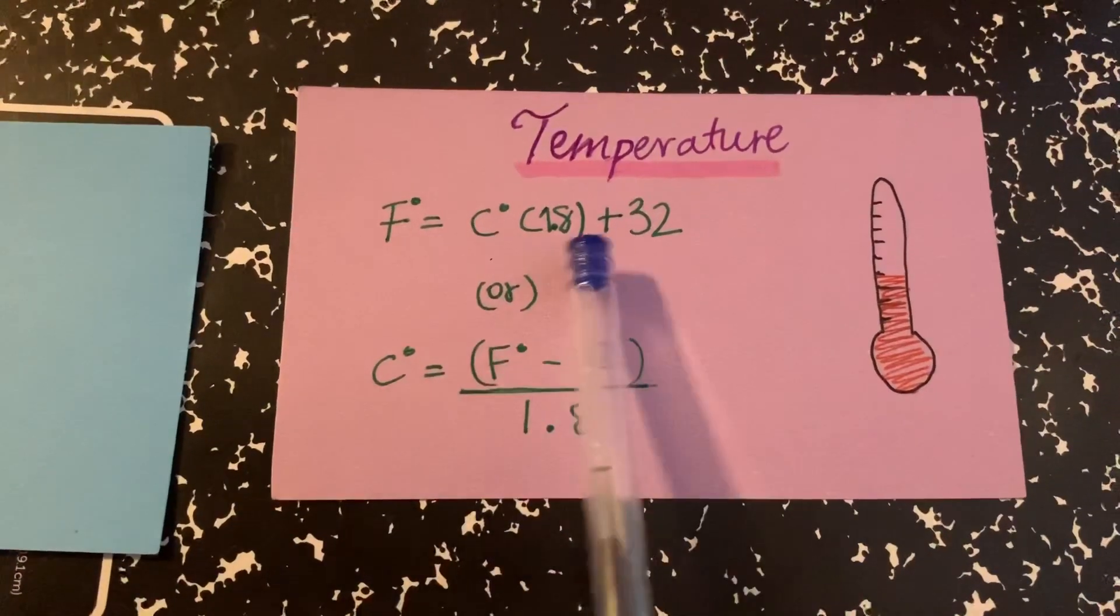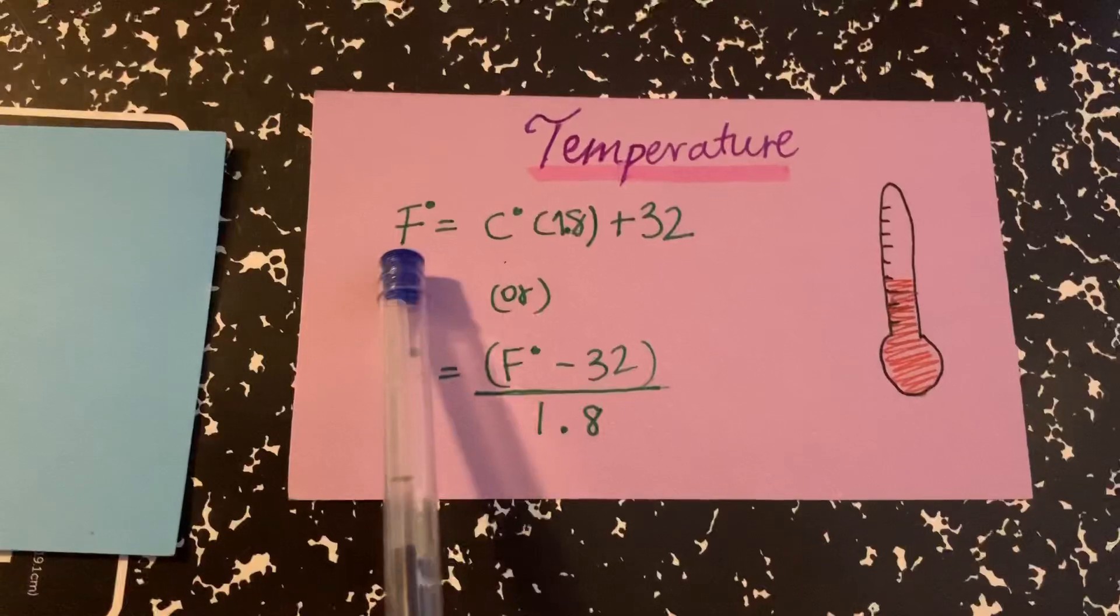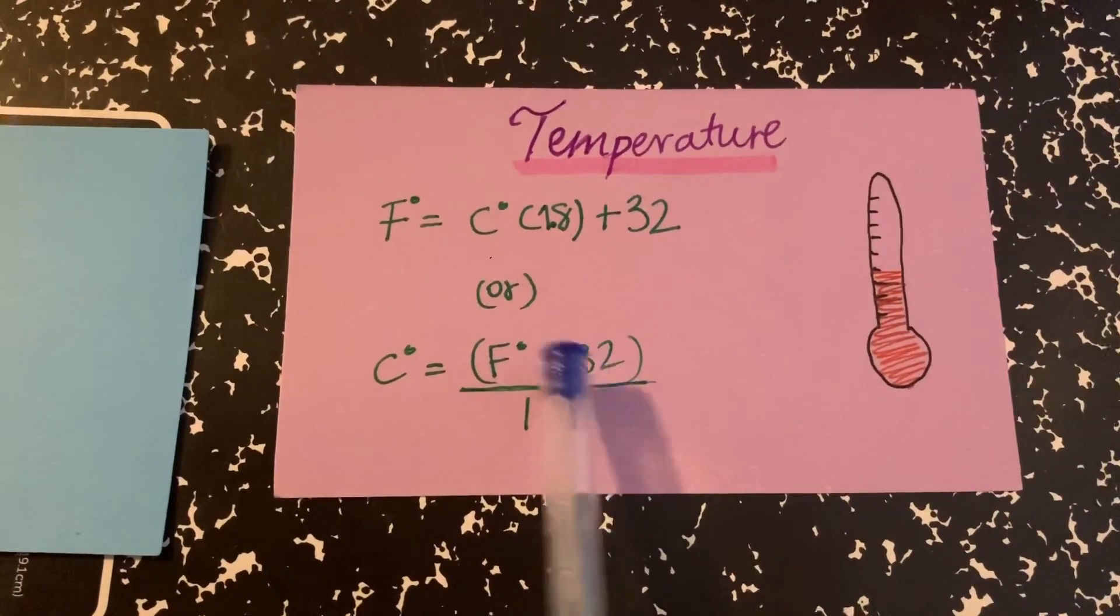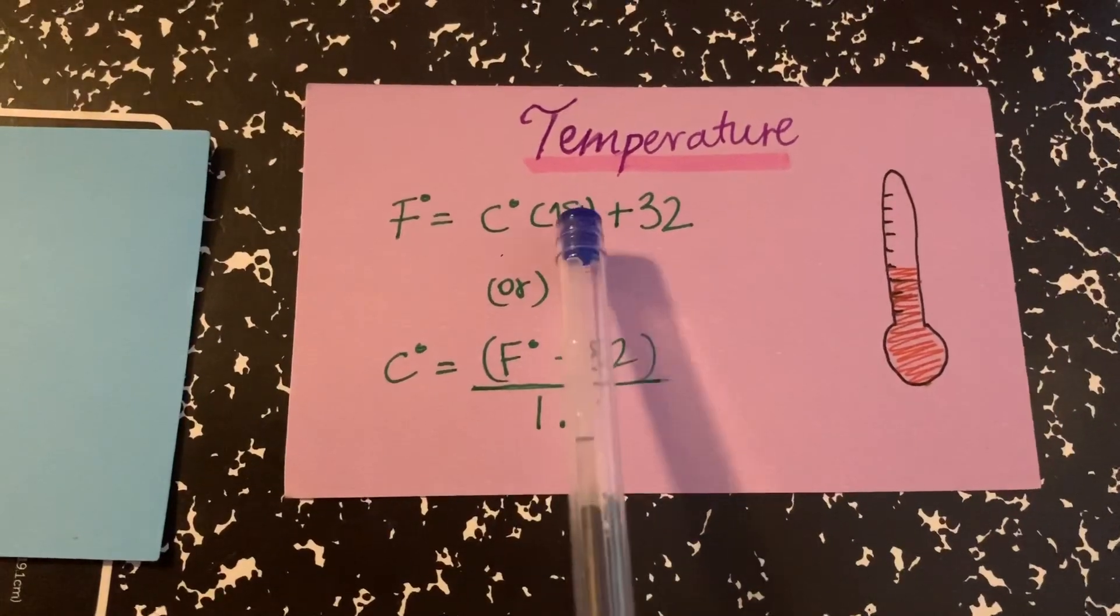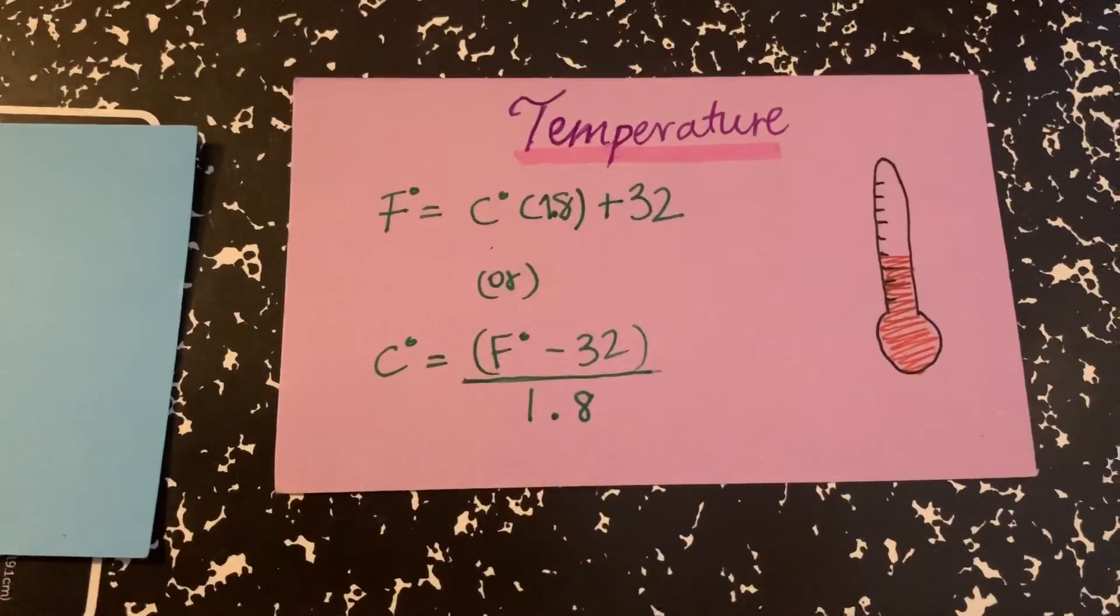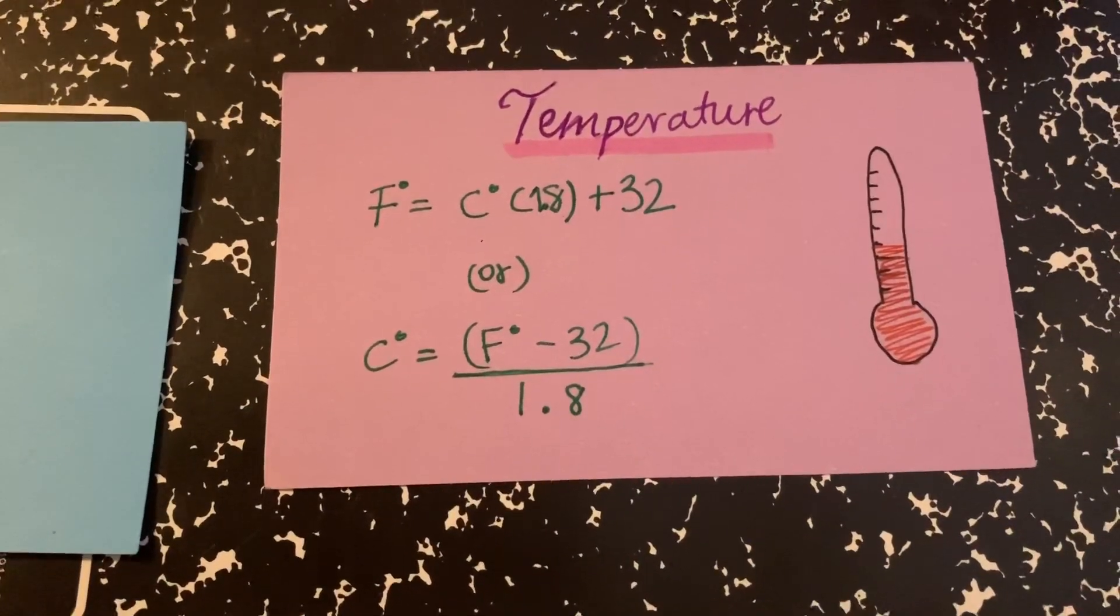So you leave the C alone and then this 32 will go to the Fahrenheit to get subtracted. So F minus 32. And this, because it's multiplying, it will go to divide. So you divide it by 1.8. That's how you find out your centigrades.